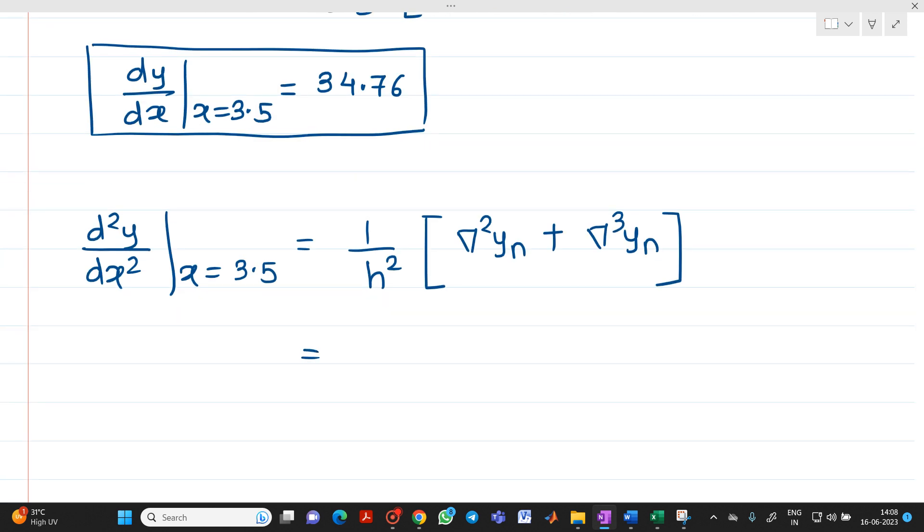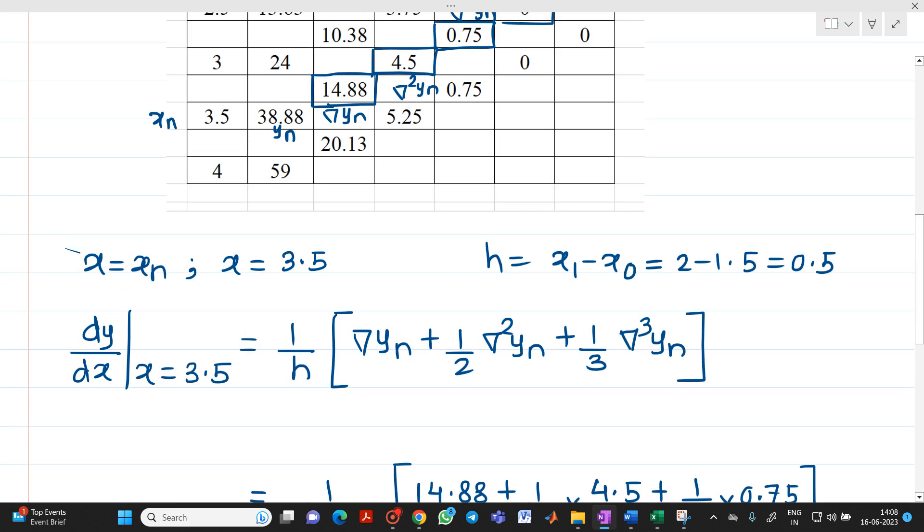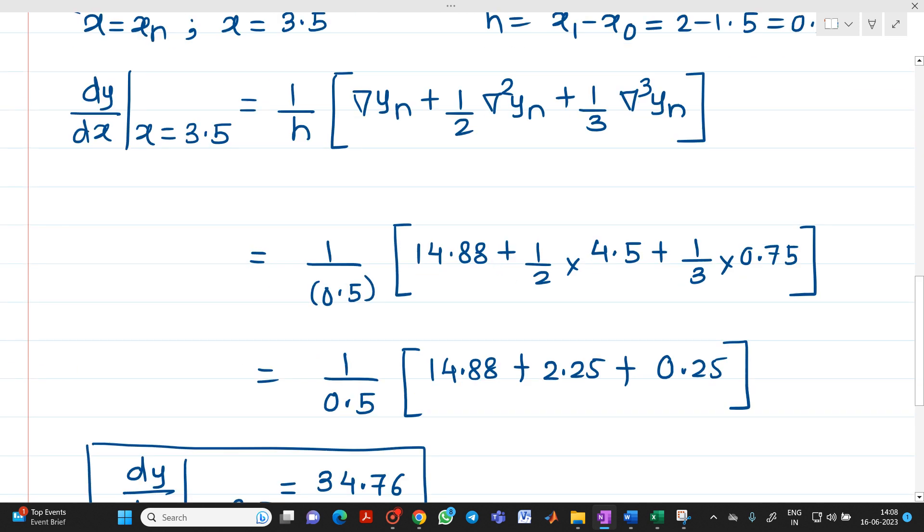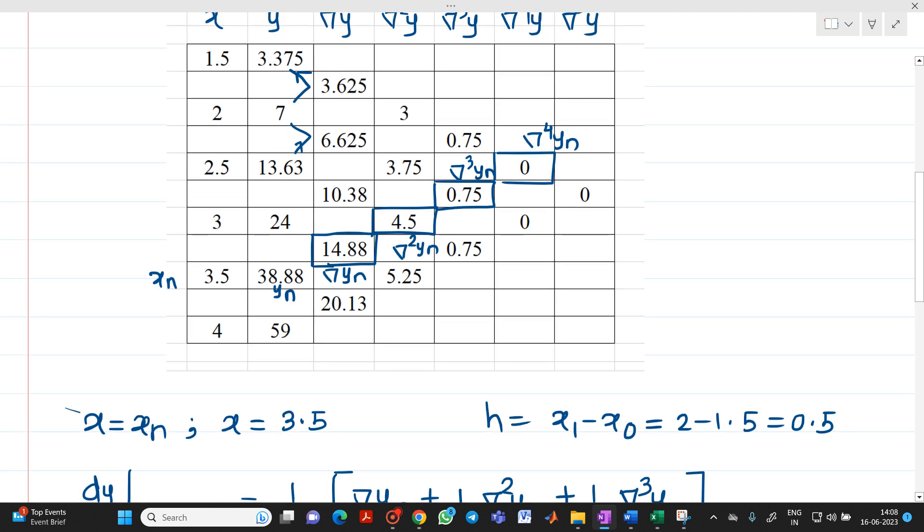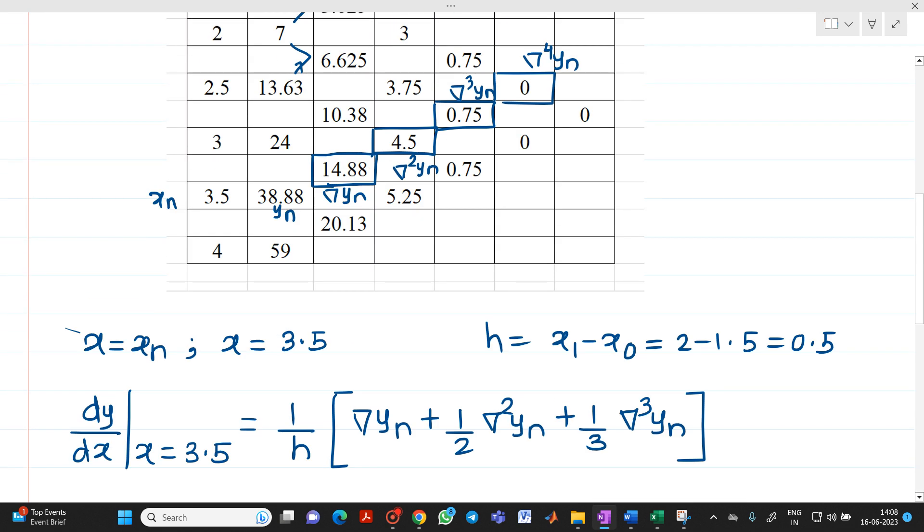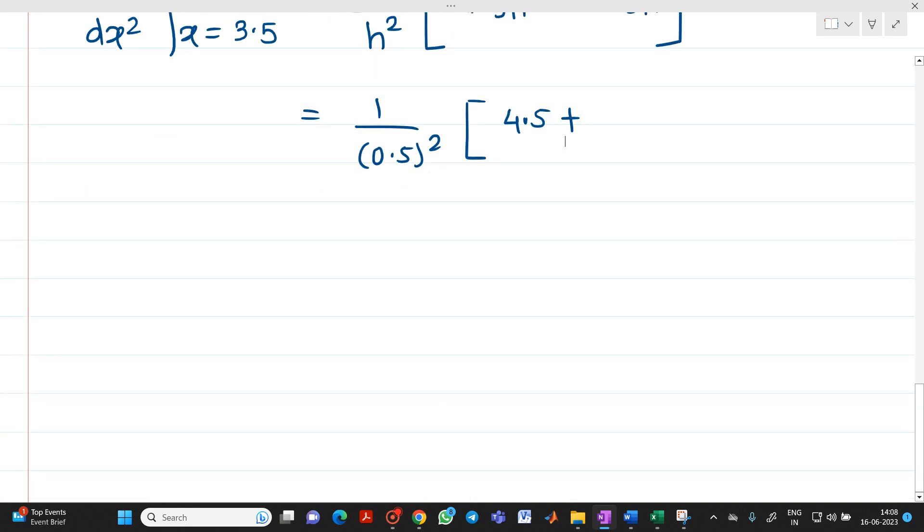So what is your value of h? It was 0.5 square. After that, what is del square yn? Del square yn is, if you see, let me check, del square yn is 4.5 and del cube yn is 0.75. This will be del cube yn. So it will be 0.75.